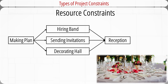For example, assume you are planning a wedding reception that includes three activities: making a plan, hiring a band, sending out invitations, and decorating the hall. Each activity takes one day. The three activities could be done in parallel by different people because there is no technical dependency why they must happen in sequence. However, if there is only one person available to perform all three activities, the resource constraint requires the activities be performed in sequence, causing a delay.